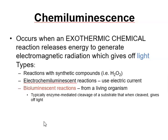First, we need to understand the difference between fluorescence and luminescence. Fluorescence is what comes from green fluorescent protein, whereas luminescence comes from luciferase. Chemiluminescence is a chemical reaction which gives off electromagnetic radiation leading to emission of light. What we deal with when studying luciferase is an enzyme-driven chemiluminescent reaction, which we call bioluminescence — where a living organism produces an enzyme that cleaves a substrate, and when cleaved, gives off light.